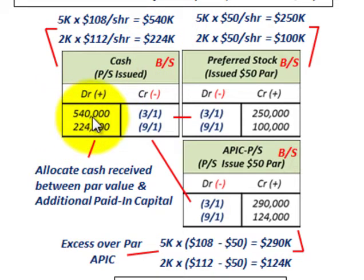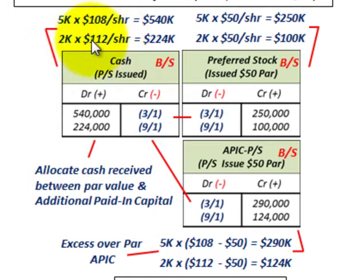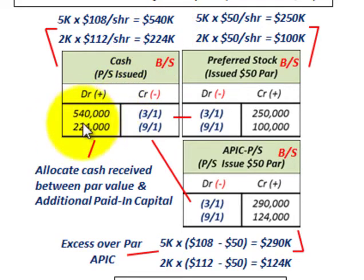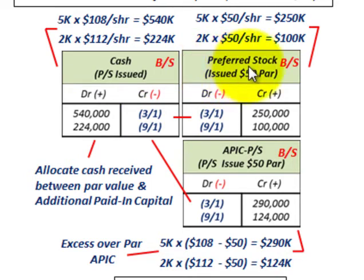Five thousand shares at a hundred and eight dollars per share equals five hundred and forty thousand dollars, which we debit to our cash account. On September 1st, we additionally issued two thousand shares at a hundred and twelve dollars per share, receiving two hundred and twenty-four thousand dollars, so we debit our cash account for two hundred and twenty-four thousand dollars.